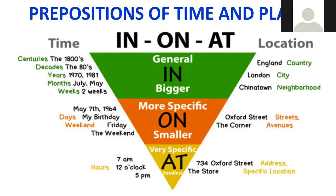Here I have an inverted pyramid that shows you the difference between each one. When I'm using in, I'm talking in general terms or in bigger locations. For example, when I use in for talking about time, centuries, the 1800s. Decades, the 80s. Years, 1970, 1981. Months, July, May. Weeks, two weeks. What about location? I use in for bigger locations. For example, a country, England. A big city, London. A big neighborhood, Chinatown.